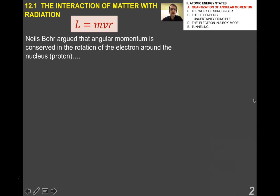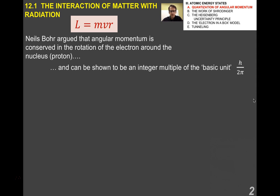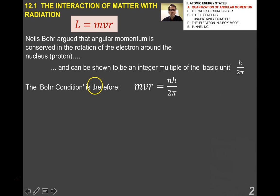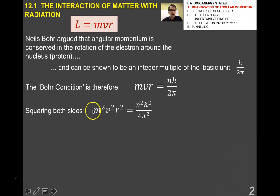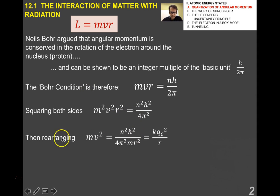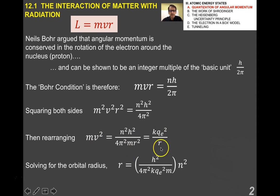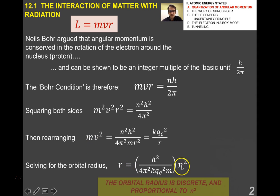It was Niels Bohr who argued that angular momentum is conserved as the electron goes around the nucleus. His idea was that it can be shown to be an integer multiple of a basic unit called h over 2π. This is known as the Bohr condition: L, which is MVR, equals h over 2π times some integer n. Doing a little algebra — squaring both sides and rearranging — I end up with MV² equals KQE² over R. Solving for the orbital radius, I get that R is proportional to N².